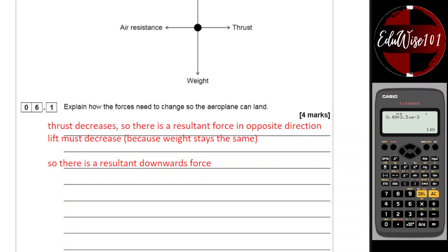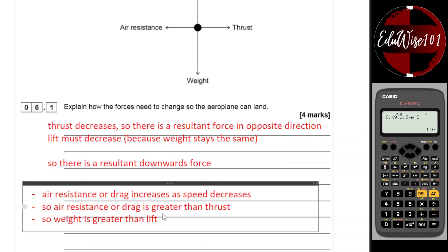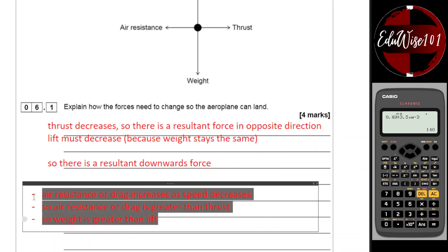Lift must decrease because weight stays the same, so there is a resultant force acting downwards. That would give you the four marks. Or you could say the air resistance or drag increases as speed decreases, so air resistance or drag is greater than the thrust, so weight is greater than the lift.